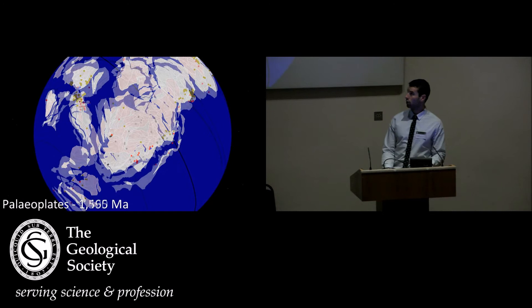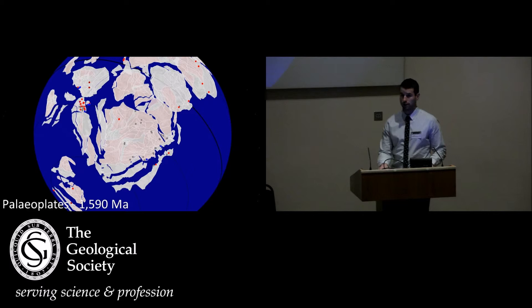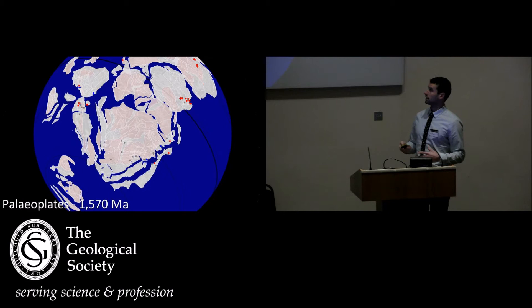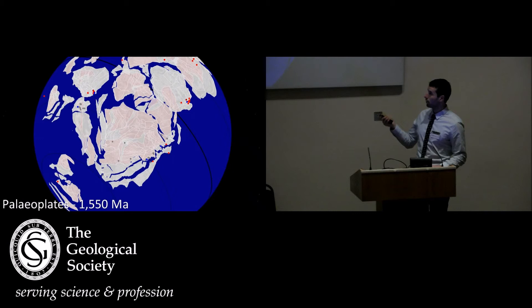At 1590 Ma, I can see there's quite a bit of activity on Australia, and our plate model suggests that it's actually connected to the northwest part of Laurentia at this time. If I slowly step forward through time, I can see that there's quite a bit of activity on Australia, and there's some on the margin of Laurentia there, but not that much.